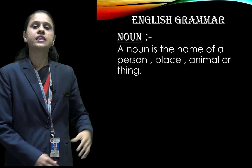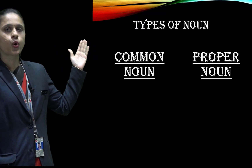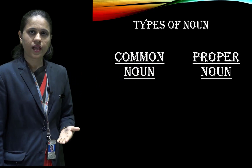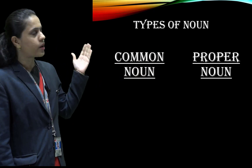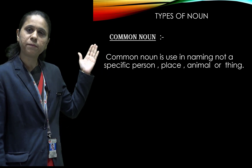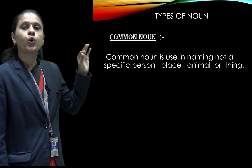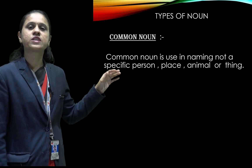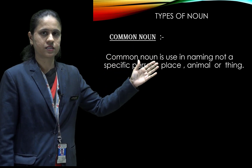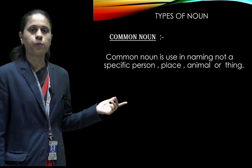Now there are two types of noun. The first one is common noun and the second one is proper noun. Now I will explain you what is meant by common noun. Common noun means general names. Common noun is not the name of a specific person, place, animal or thing. Now I will show some examples of common noun.